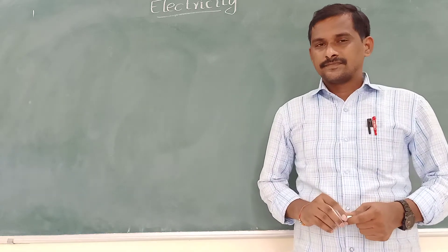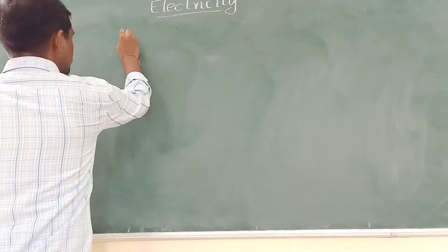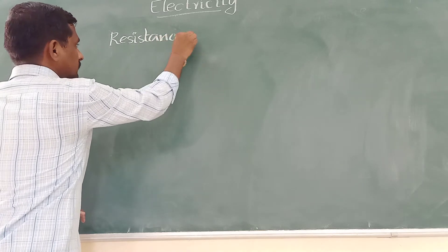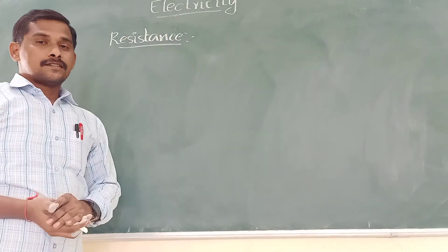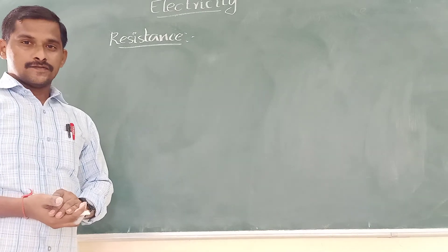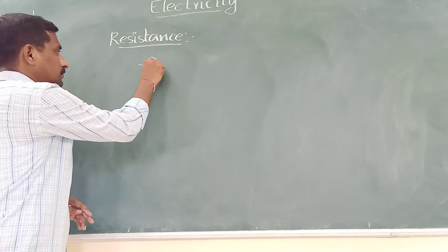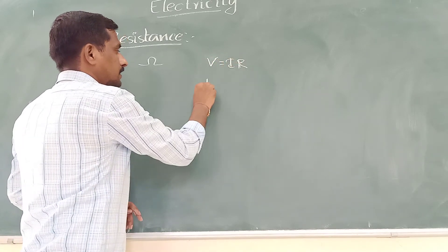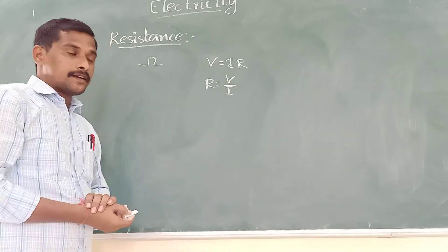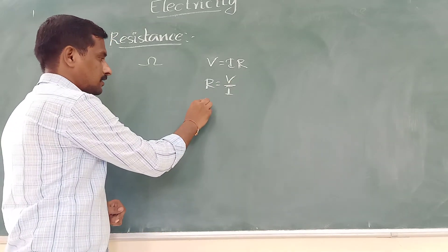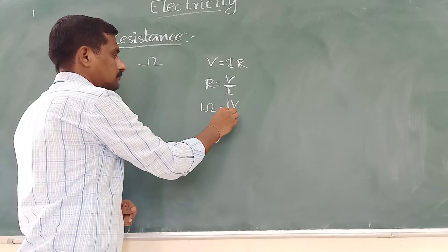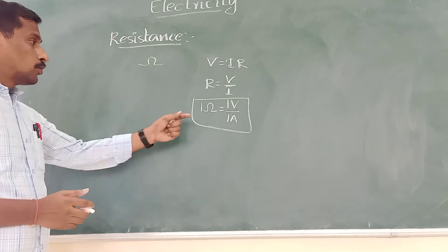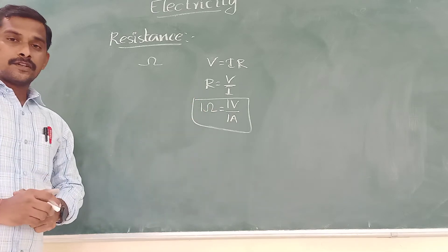Resistance, in a sense, is something that opposes the flow of charge. The unit of resistance is ohm, and we represent its symbol as ohm (Ω). From Ohm's law, V is equal to I times R, so we can say R is equal to V by I. Therefore, one ohm is equal to one volt per one ampere. This is the definition of one ohm.